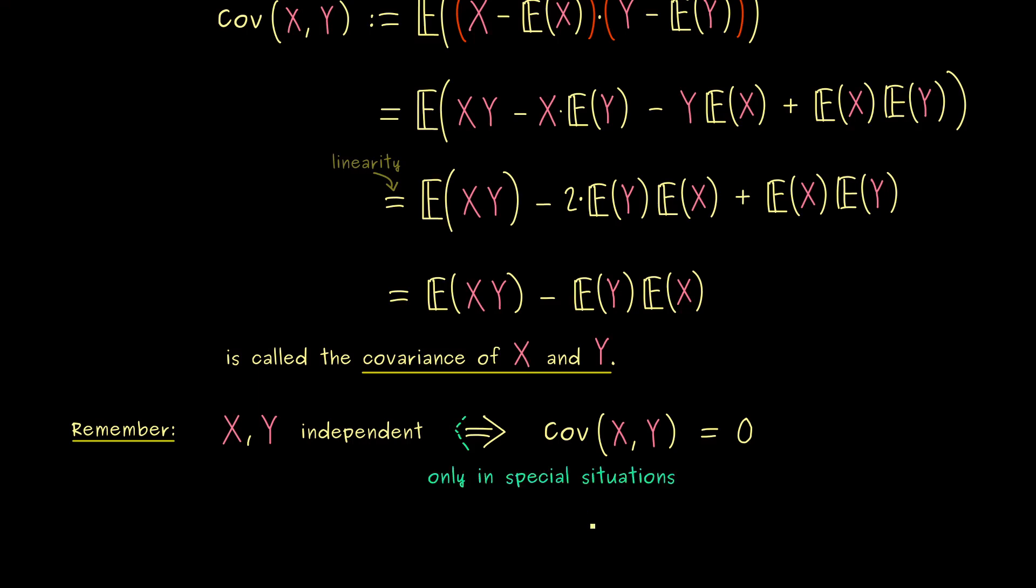It's only correct in some special situations, for example, in the case that both random variables are normally distributed. This is important to note, because often the covariance is easy to calculate, but the independence is hard to show.